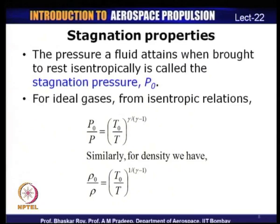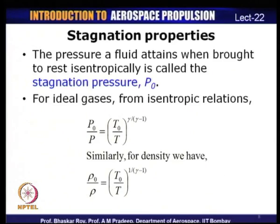From the isentropic relations, for an ideal gas, we can relate stagnation pressure to stagnation temperature via pressure and temperature ratios: P₀/P = (T₀/T)^(γ/(γ-1)), where γ = Cₚ/Cᵥ. Similarly for density: ρ₀/ρ = (T₀/T)^(1/(γ-1)).